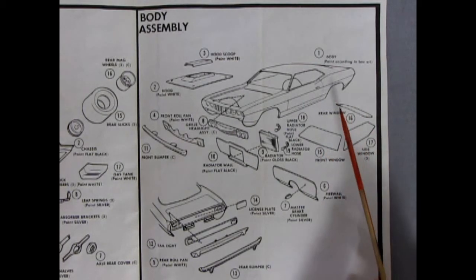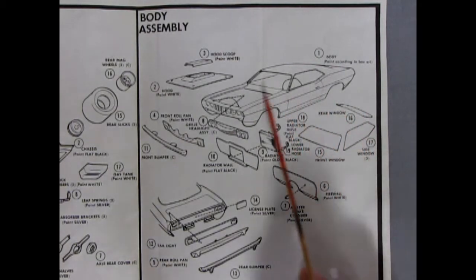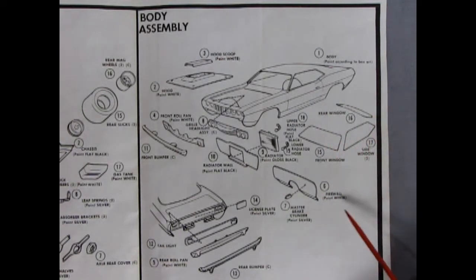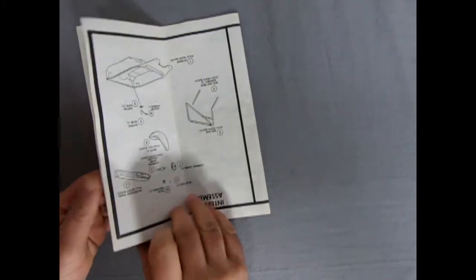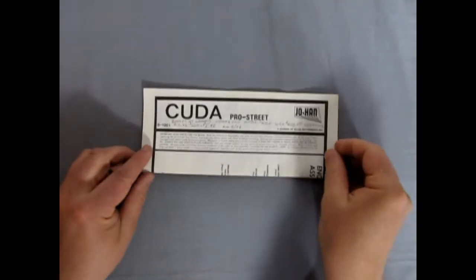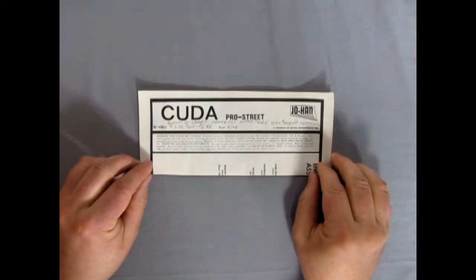There's our radiator with both upper and lower radiator hoses. Our glass is all separate components. It's not got the bars across linking them. There's our firewall, which should be nice and smooth because, again, it's a drag racing thing, so you don't want the heater motors and all the rest. Master cylinder gluing on because you can't go unless you stop. License plates and then the taillights as one piece, the rear roll pan and our rear bumper. And that completes a look at our Johan 71 CUDA Pro Street instructions.